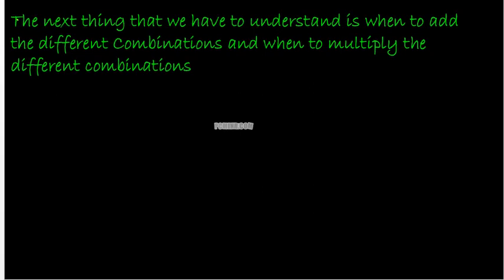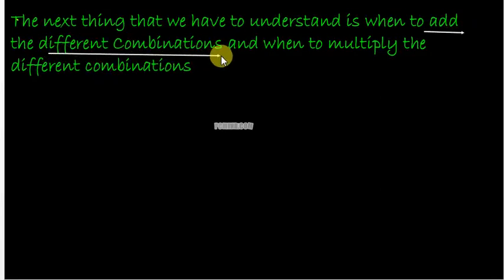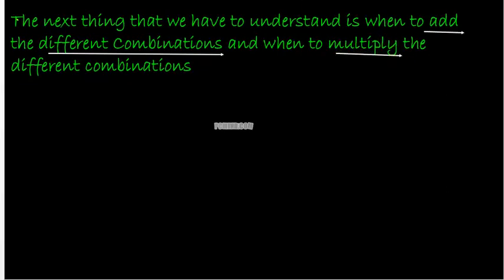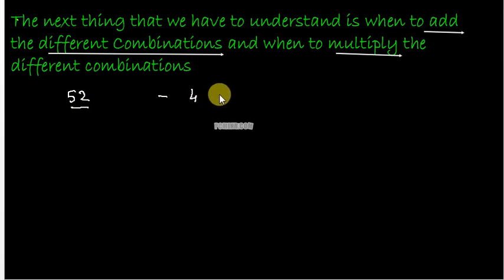The next concept you need to understand is when to add the different combinations — like when you get three different combinations. Let's understand this with the help of an example. Say from a deck of 52 cards, you want to select four cards. In the first case, the condition is that all cards should be of the same suit.